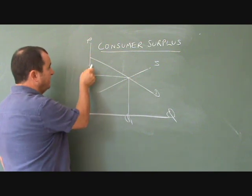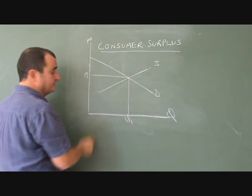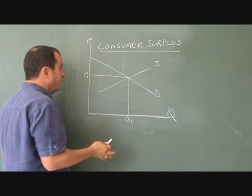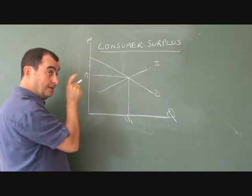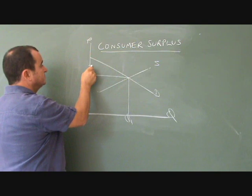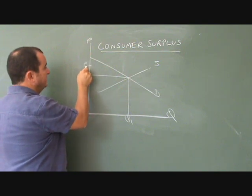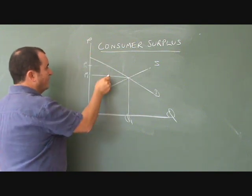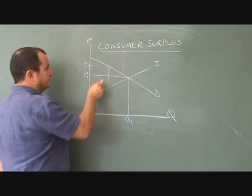We know that because even at higher prices there was some demand, and yet they don't have to pay that higher price. They only have to pay P1. So for a person who was prepared to pay, let's call this P2, they only have to pay P1. They have a consumer surplus of this much.